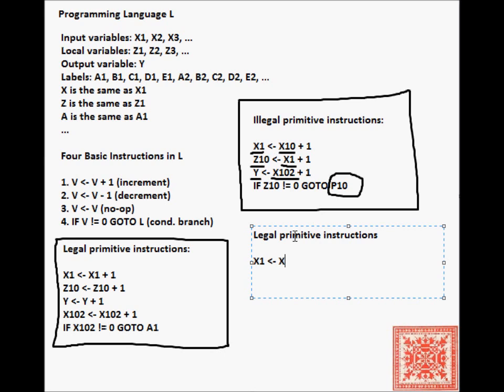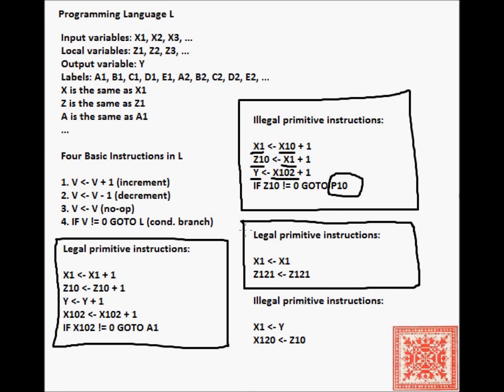Here's another set of examples. X1 arrow X1 and Z121 arrow Z121 are examples of two legal no-op instructions. There's a couple of illegal no-op instructions: X1 arrow Y, X120 arrow Z10 - the variables are different on the left-hand side and the right-hand side.